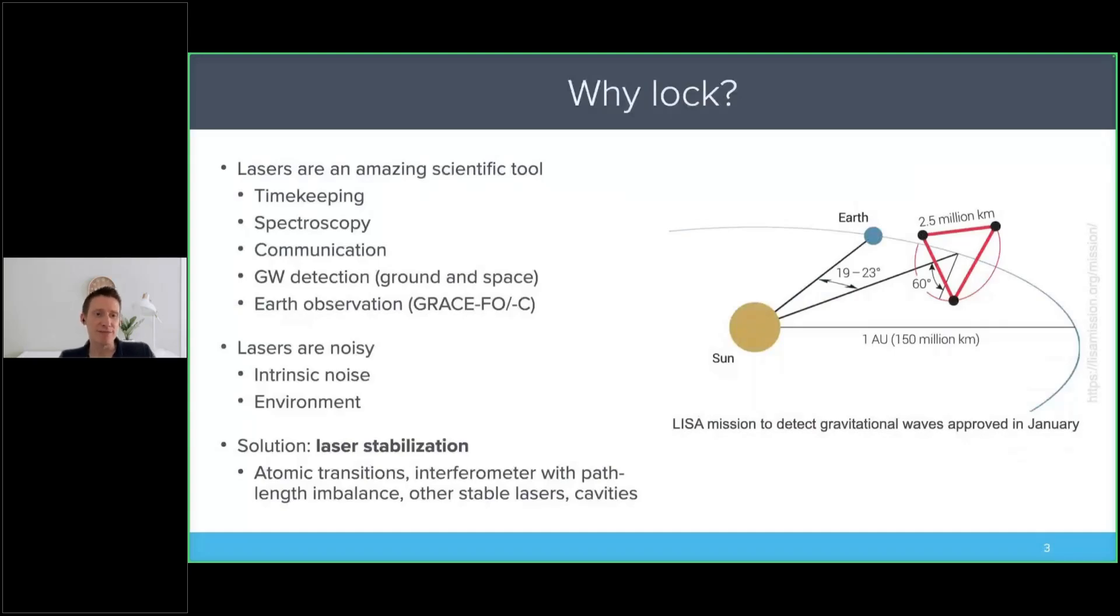So lasers are extremely useful, mostly because of their short wavelength. They have a wavelength which is about a million times shorter than radio waves, and this wavelength can be used like a ruler for metrology applications. You can further subdivide the wavelength using techniques like interferometry or digital phase meters.